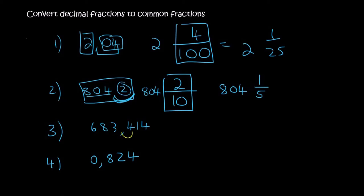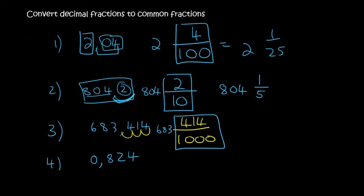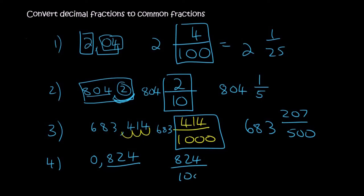For 683.414, there are three decimal places, so that's written over 1000. The 683 hangs out in front and 414 goes at the top. Typing it into the calculator simplifies to 683 and 207 over 500. For the next one with three decimal places, that's 824 over 1000, which the calculator simplifies to 103 over 125.